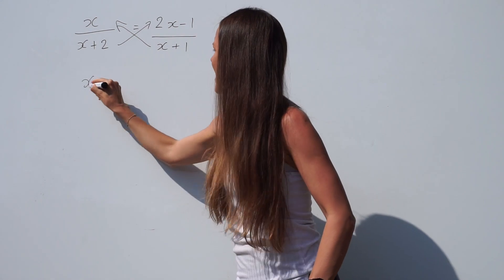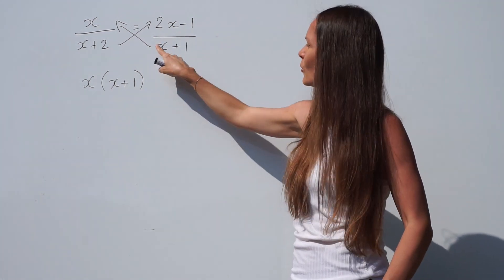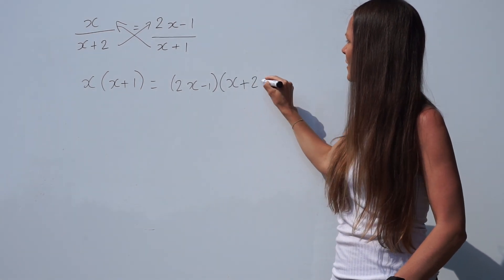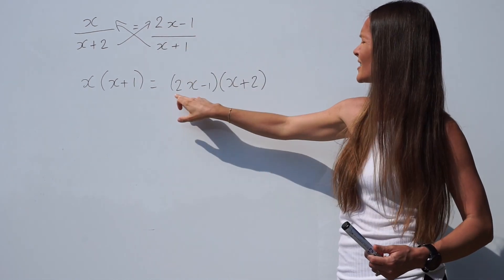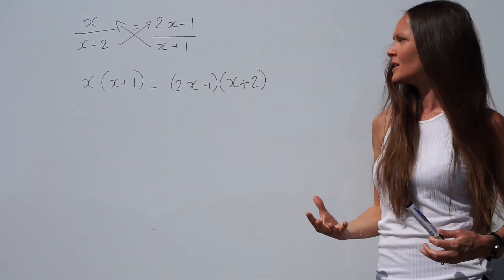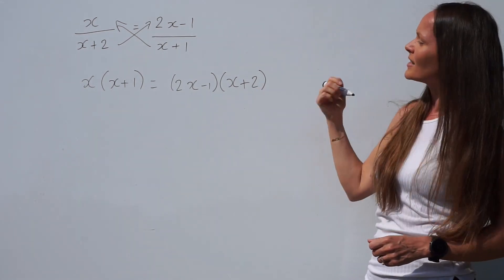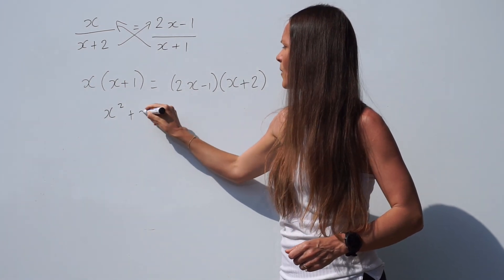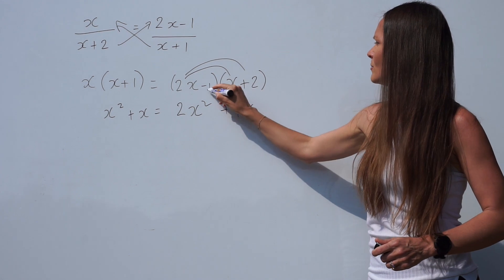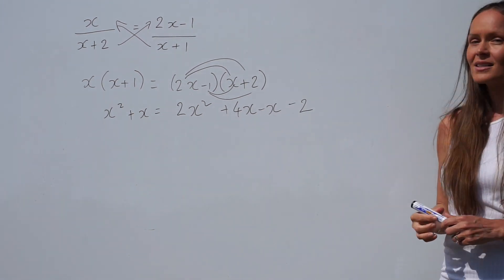When I do that, it becomes x brackets x plus 1 — we're multiplying these together and putting this in brackets because there's more than one term in this expression, we have to multiply all of it by x. On the other side, we have 2x minus 1 in one bracket and x plus 2 in the other. Whenever you see more than one term in an expression and you're multiplying them together, it's much better to put it in brackets. Now we need to expand these brackets — the fractions have gone, those denominators have cancelled. So x multiplied by x is x squared, x multiplied by 1 is x.